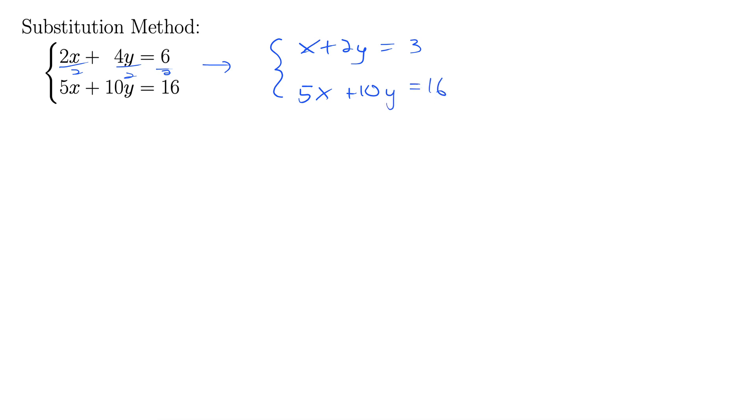And now we have a variable that we can substitute with. We have that lone variable which is necessary for the substitution method. So let's go ahead and solve for x up here to really get the variable by itself. I'm subtracting 2y from both sides here. That gives us x equals 3 minus 2y.